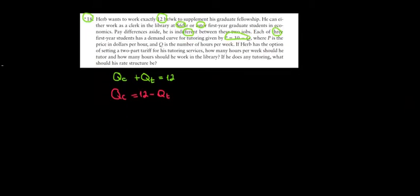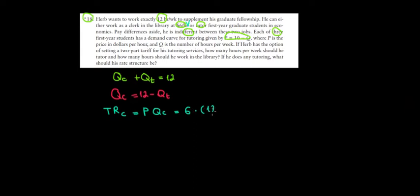Total revenues from working as a clerk equal the price per hour times the quantity worked. We get $6 an hour as a clerk, times the quantity (12 - QT), so if we expand the bracket that's 72 - 6·QT. That's the total revenue from clerking.